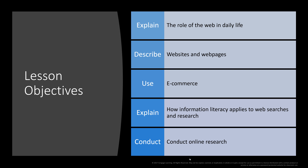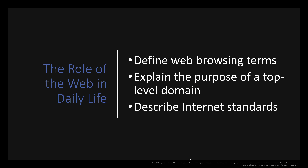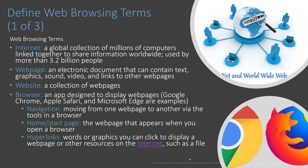Our lesson objectives — this is going to be a five-part video series. In the first part, I will look at the role of the Web, the Internet, and daily life. We'll learn more about websites, web pages, web apps, e-commerce, and information literacy — also called digital literacy — which applies not only to utilizing your devices, but how we utilize the Web, where we store data, and more. Finally, we'll look at how to conduct online research and how to better use browsers for searching. In this first part, we'll define web browsing terms, explain the purpose of a top-level domain, and describe Internet standards — the international Internet standards that allow the Internet to operate with common protocols, common encryption methods, etc. When everyone's doing the same thing throughout the world, that's what makes the Internet work.